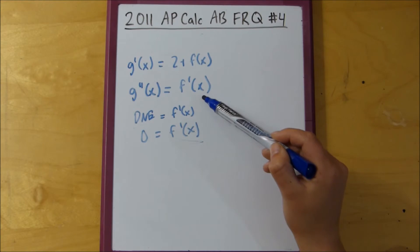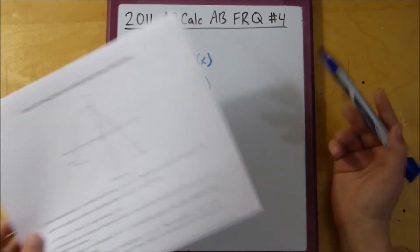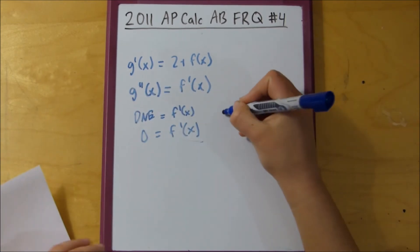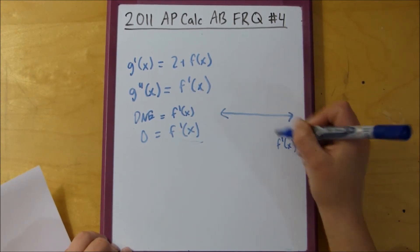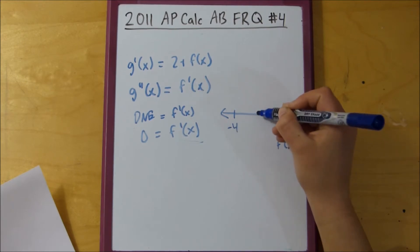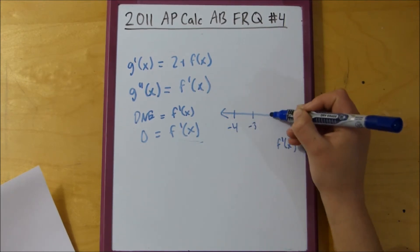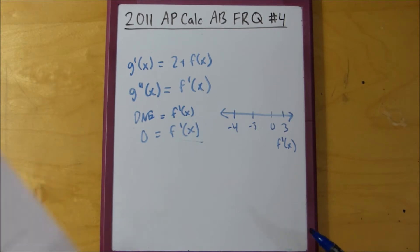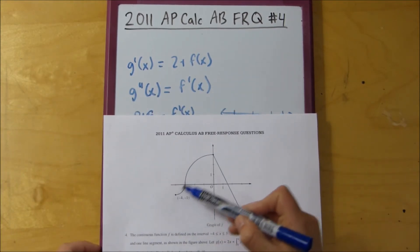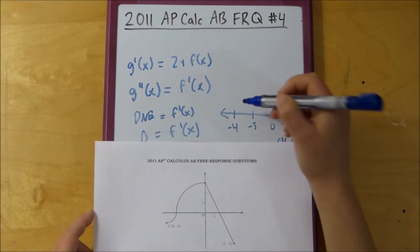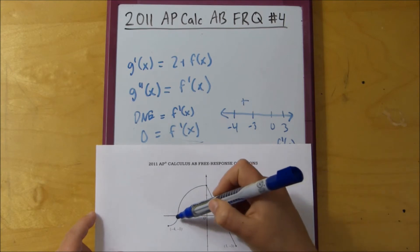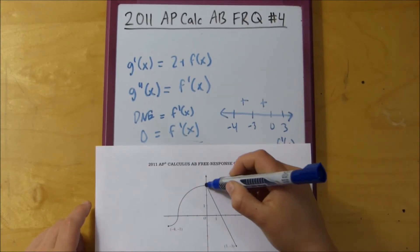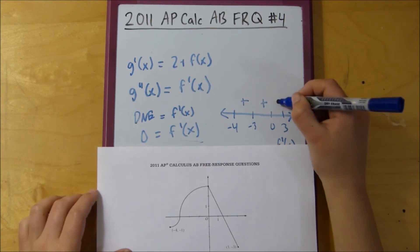So, the places where the tangent line does not exist include 0 and negative 3. So, we make our number line again. This is f prime of x. We've got, we set up our endpoints, negative 4, and then we have got negative 3, 0, and 3. And then we test points in those intervals. So, we're just looking at the slope of this. So, I see that this slope is positive. So, this is positive. And then from negative 3 to 0, it's still positive. It's still increasing. So, this is also positive. Then, from 0 to 3, I see that the slope changes to negative. Negative.